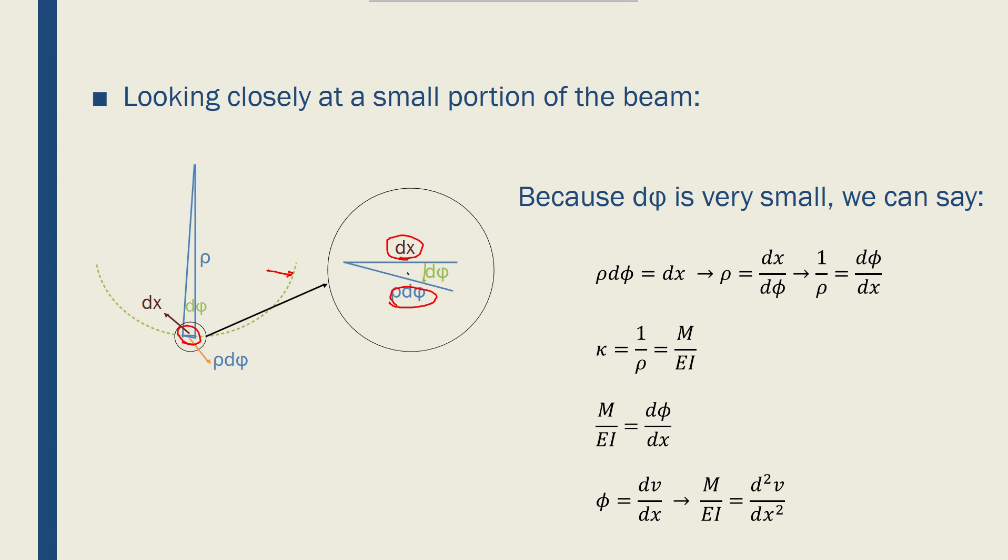And the reason that dx could be equal to rho d phi is that d phi is a very small angle. For very small angles we know that sine d phi is equal to tangent of d phi, which is equal to d phi.